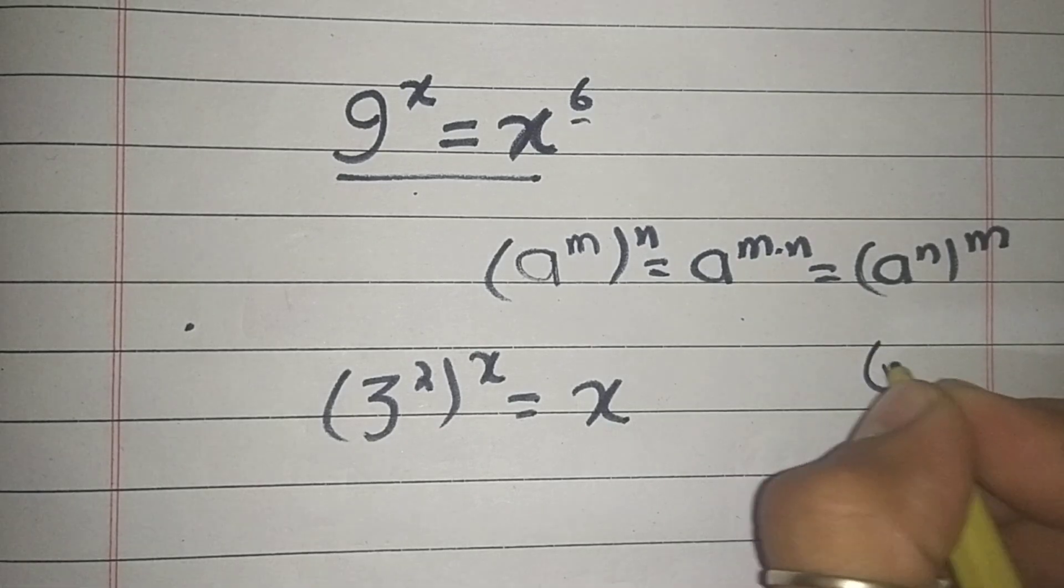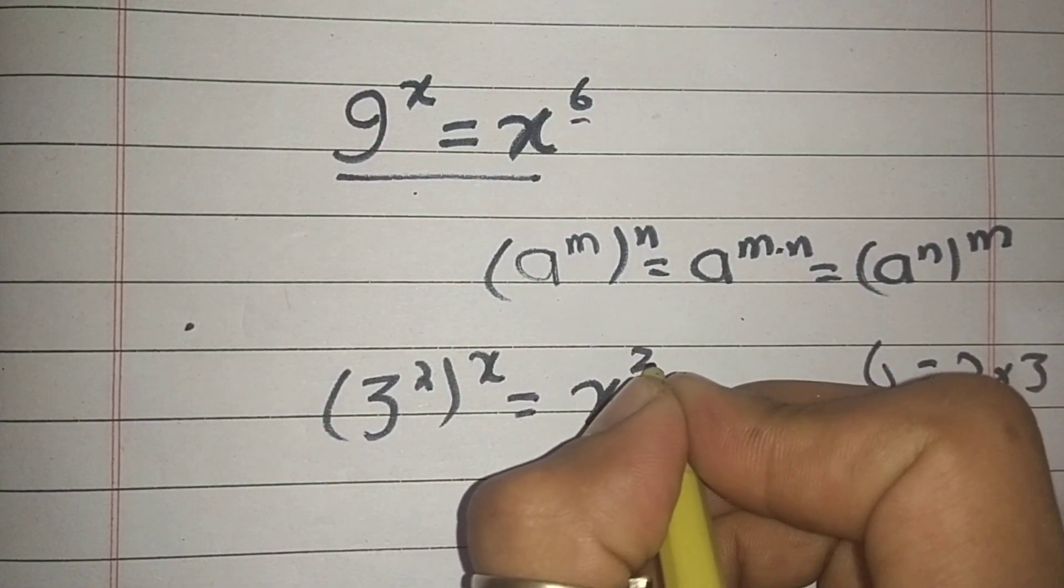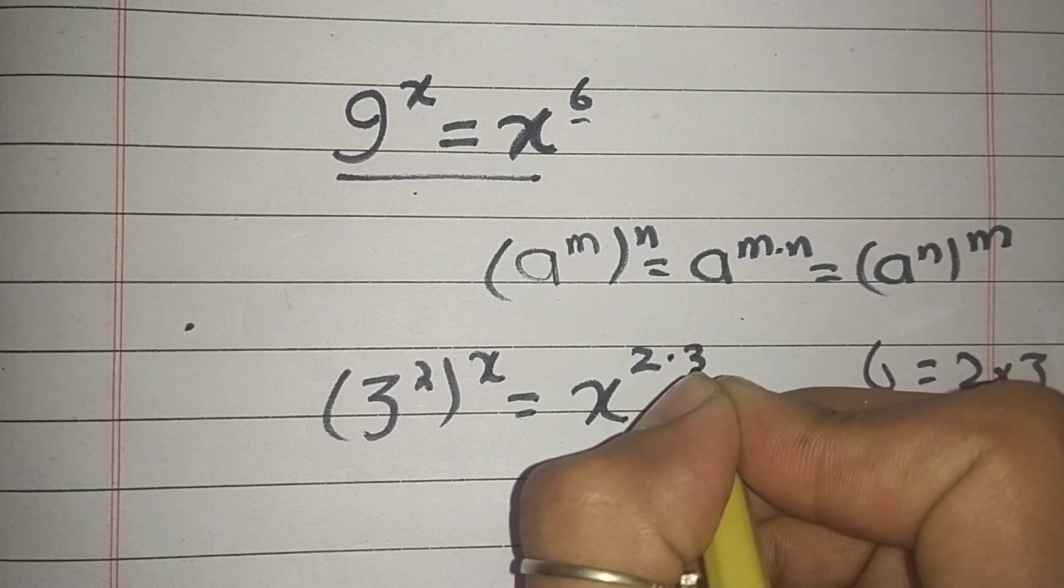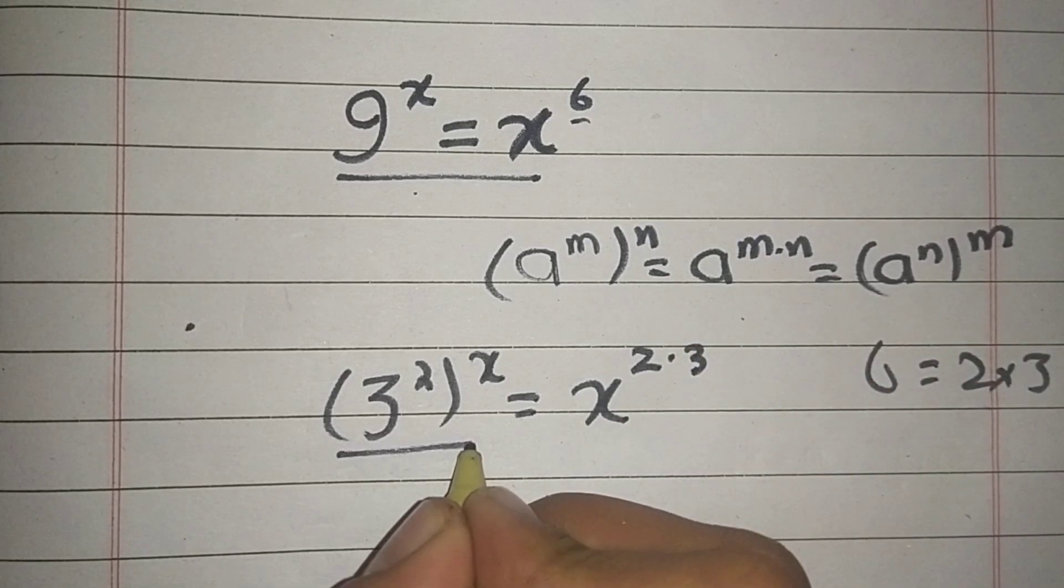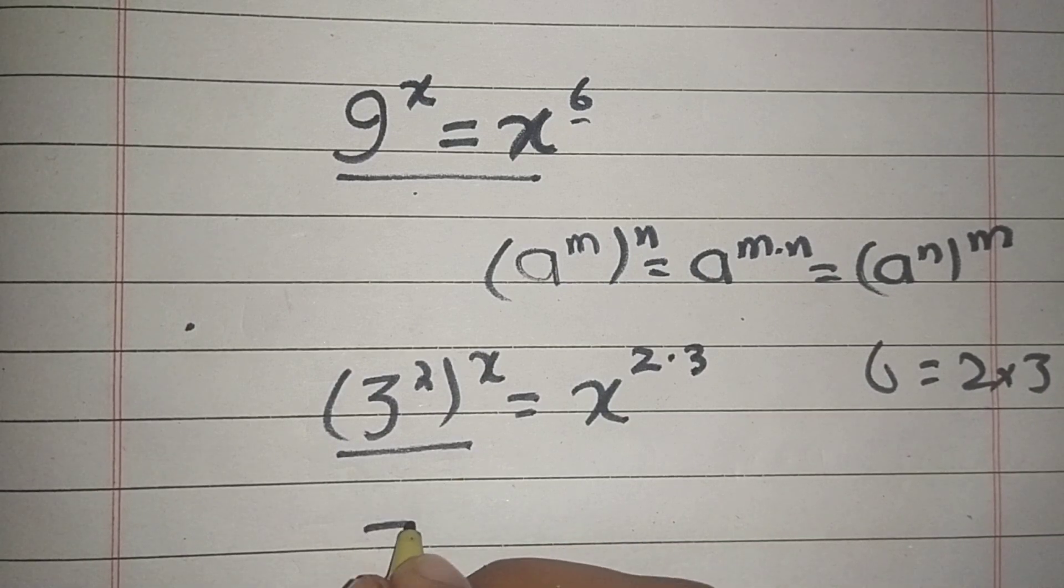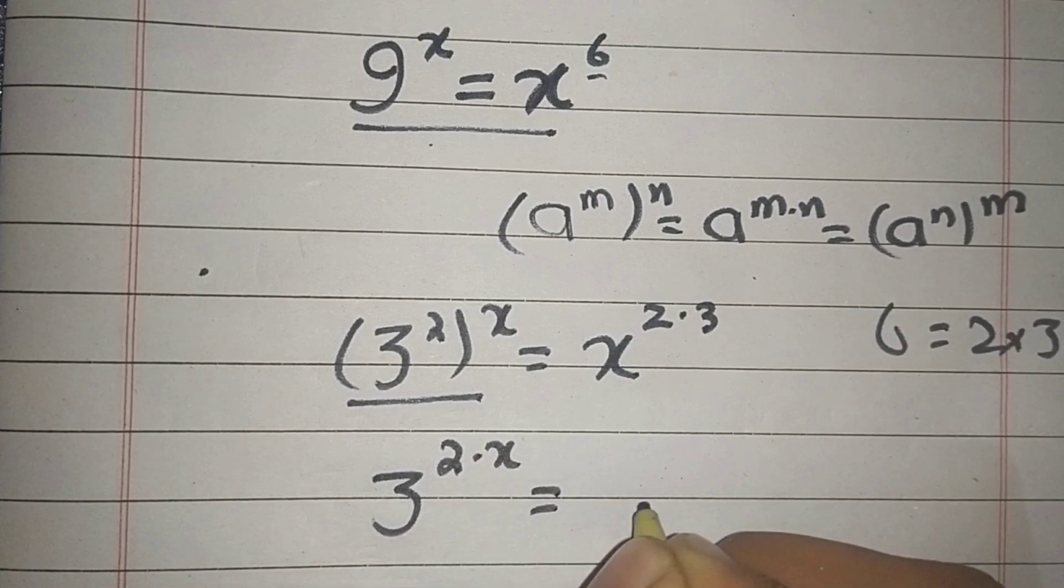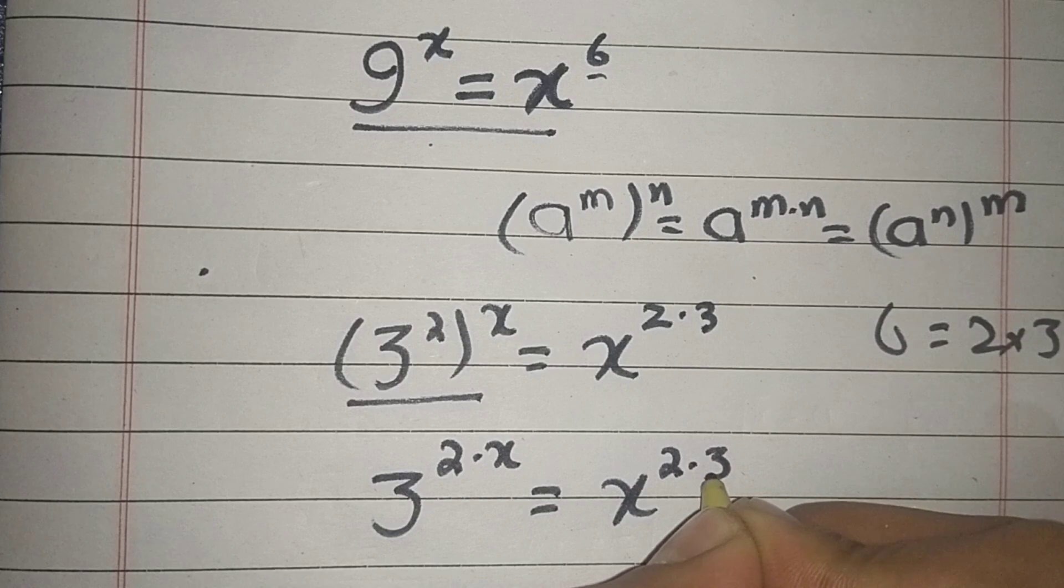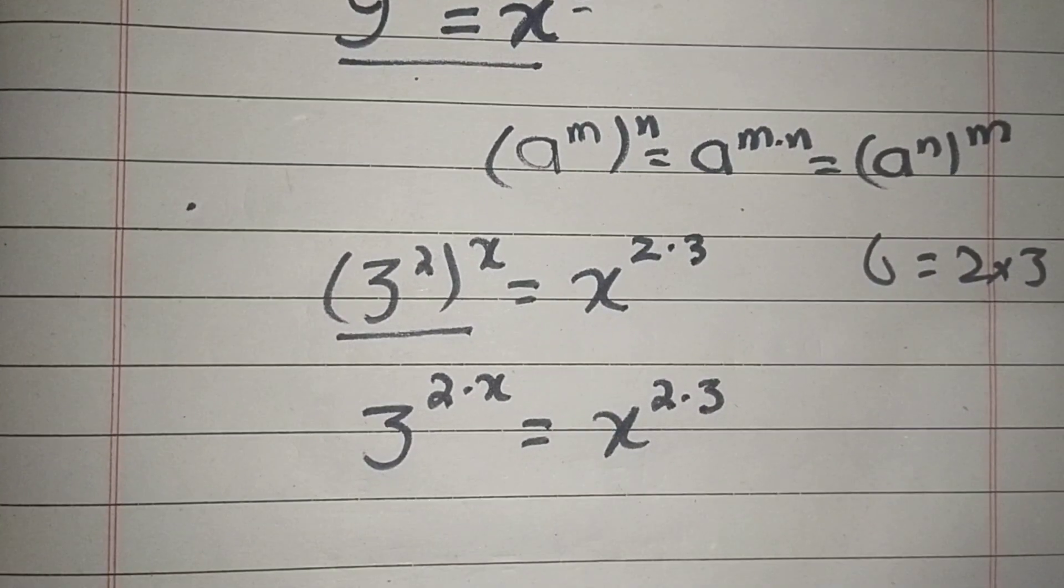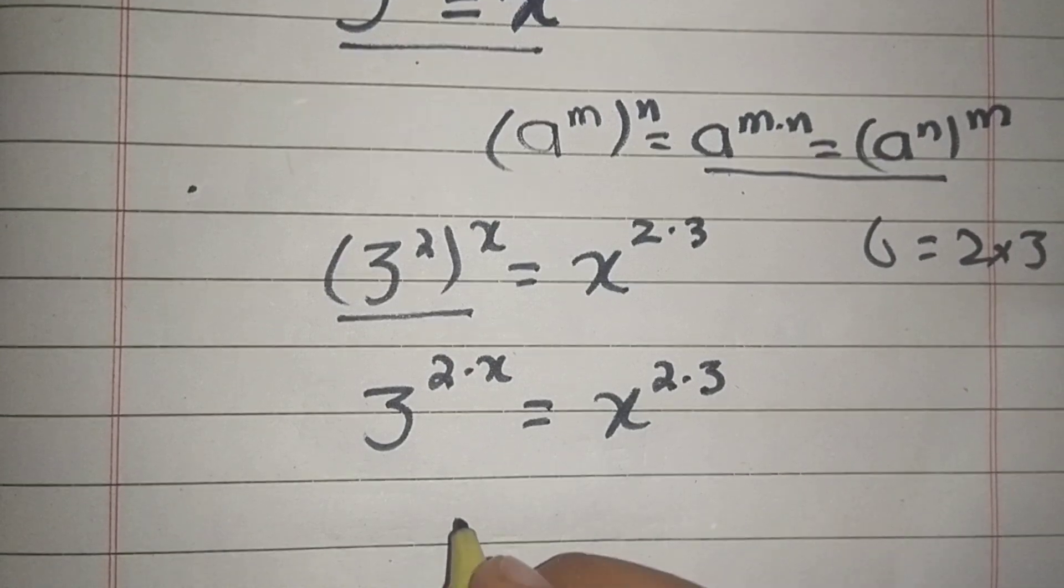We can write this 6 as 2 times 3. Now we can write this side as 3 raised to power 2x equals x raised to power 2 times 3. Applying this property here, we can write...